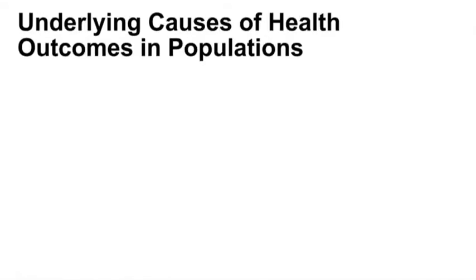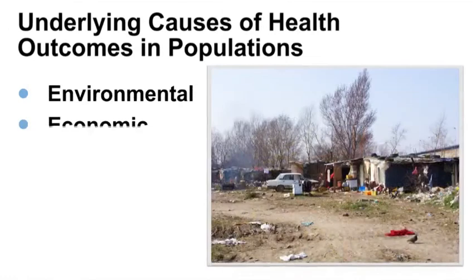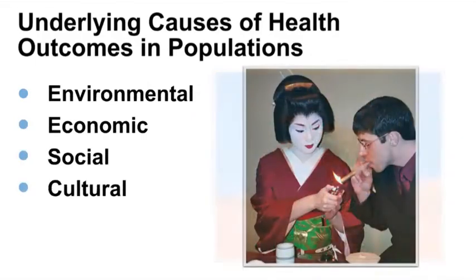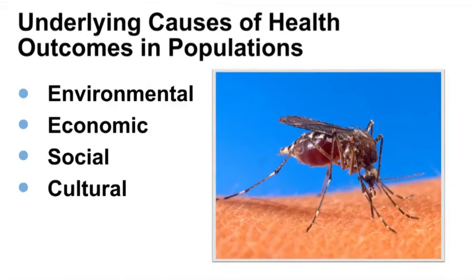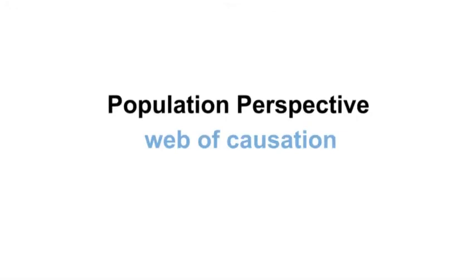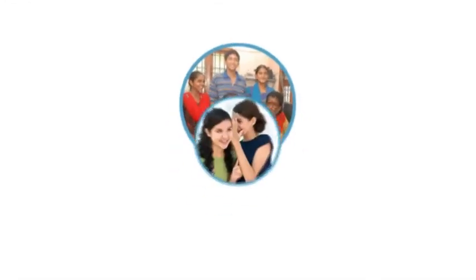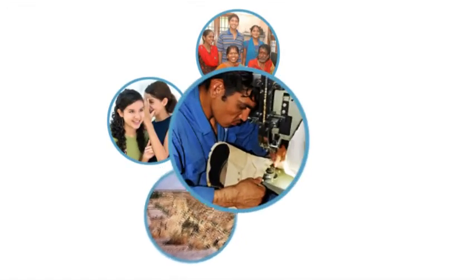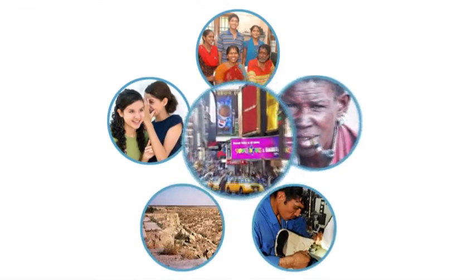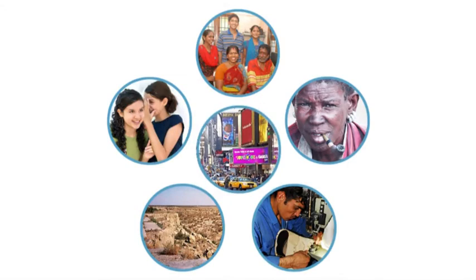We can also look at the underlying causes of disease or health outcomes in populations — for example, underlying environmental, economic, social, and cultural factors, which may affect how viruses mutate over time and adapt to their environment. When we talk about the population perspective, we are referring to a web of causation where many factors may play a role in disease development — including family support, social networks, global climate, labor conditions, tobacco production, or even advertising. A population health perspective can also focus on health disparities, especially those related to socioeconomic status.